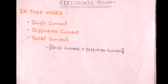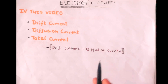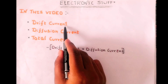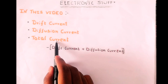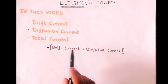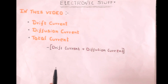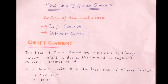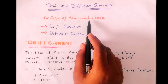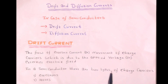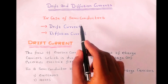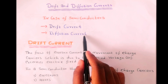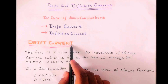Hello friends, welcome to my channel. Today in this video, we will understand what is drift current, diffusion current, and total current caused by drift and diffusion current. So friends, let's get started. In case of semiconductors, two types of currents flow: first is drift current and second one is diffusion current. So first, let's start with drift current.